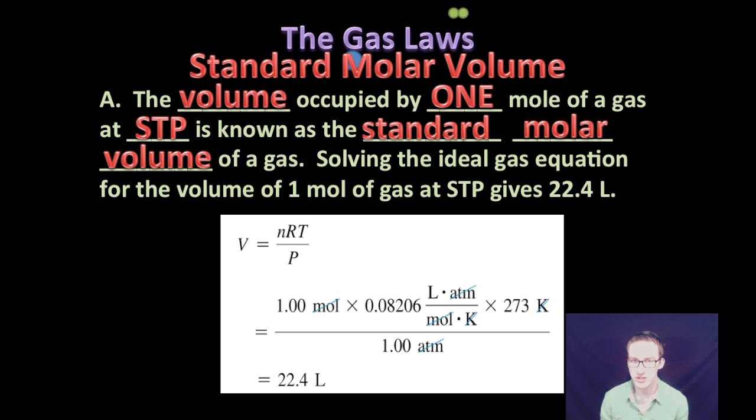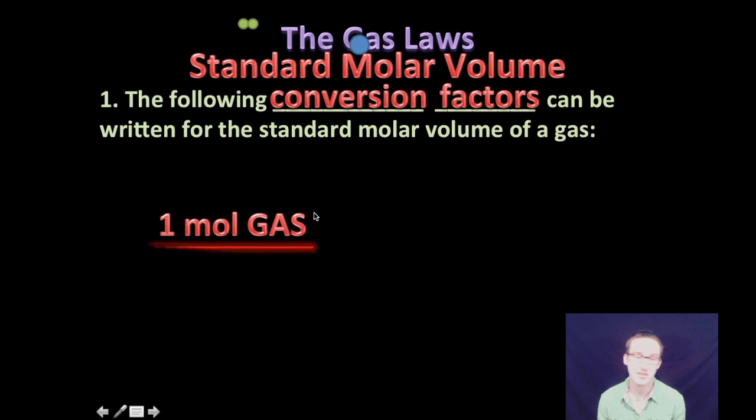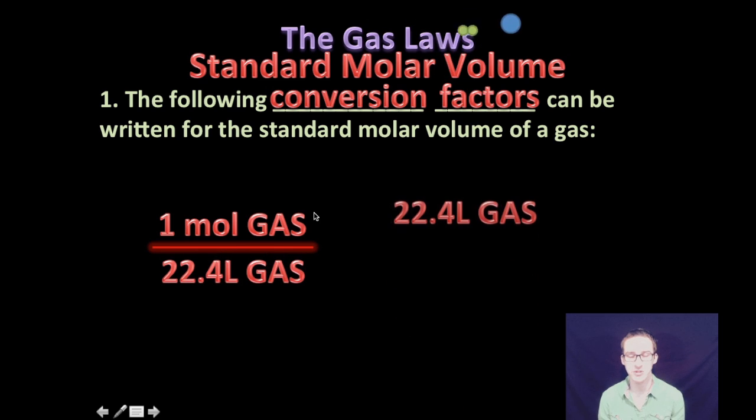So if you take a quick look at your notes, notice that we've just rearranged the ideal gas law equation to solve for volume. When you plug in one mole of gas at standard temperature and pressure, we end up with 22.4 liters, which is where that number comes from. Now I'm sure you can imagine we're going to find these to be very useful when it comes to doing conversions.